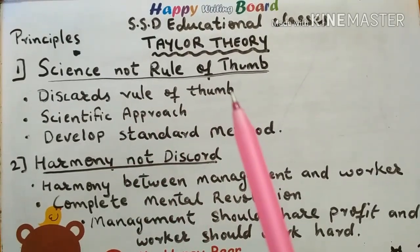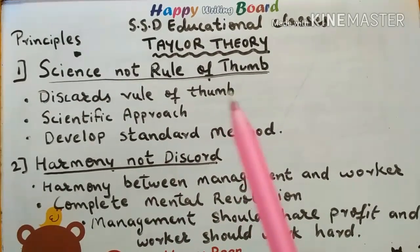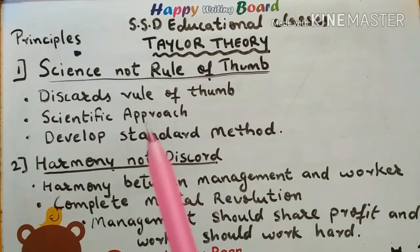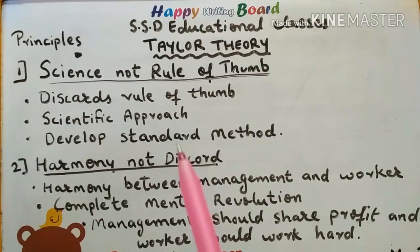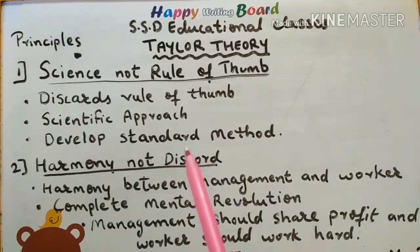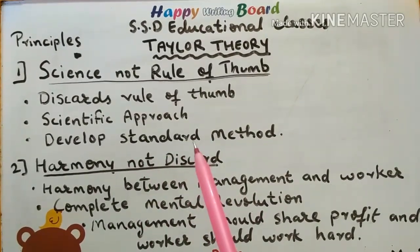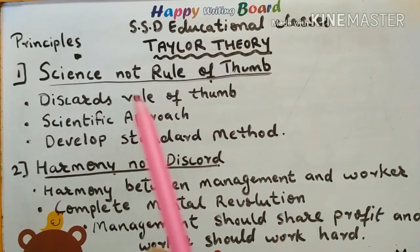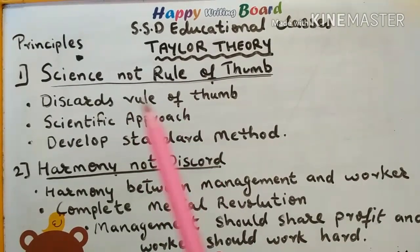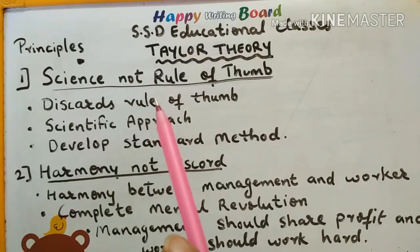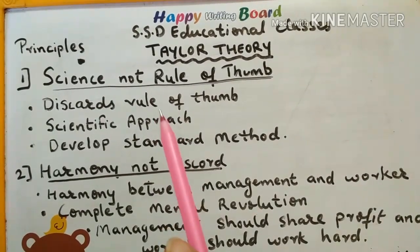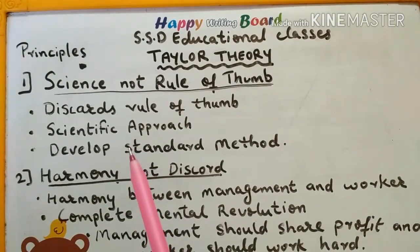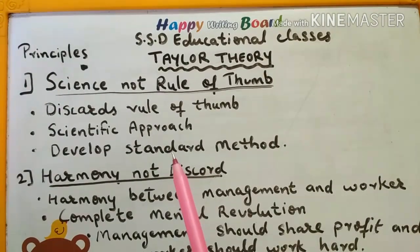Discard the rule of thumb — meaning you don't need to follow the same traditional rules, but you need to follow a new scientific approach. After following a scientific approach and developing a new standard method, your production will improve. So the first principle is: science, not rule of thumb — experiment and develop a standard in your production.